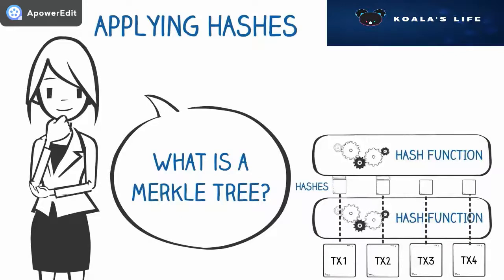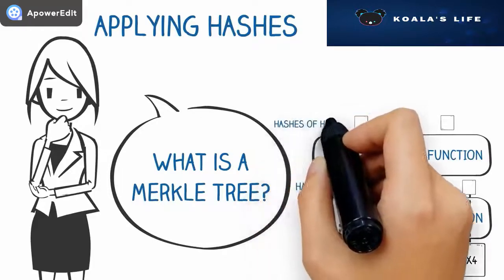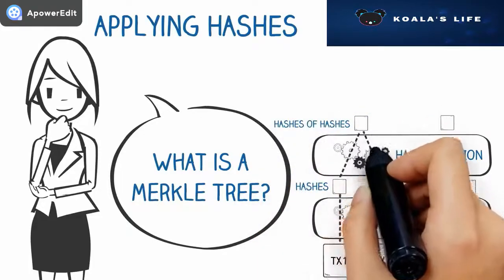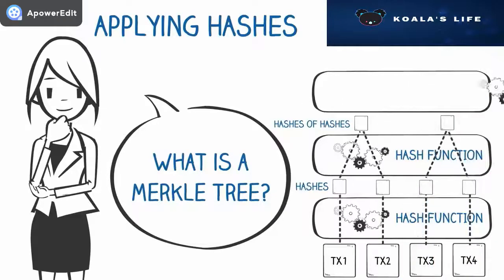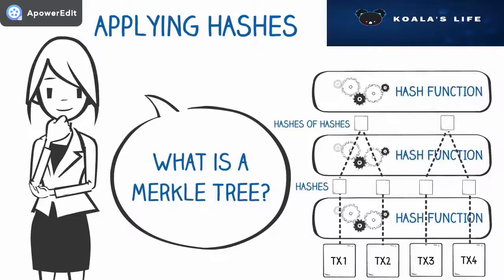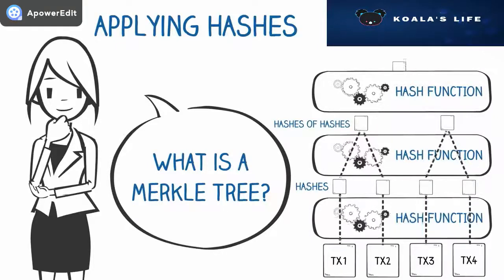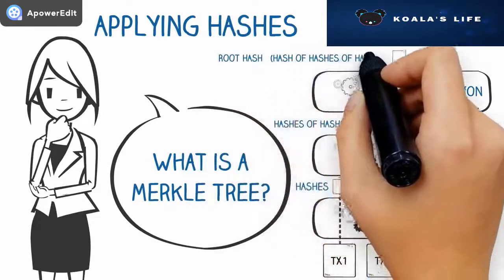Pairs of hashes are then combined and passed through the hash function again. This process generates two separate and unique hashes, which are each based upon the combination of two hashes relating to two transactions. The two hashes are then combined and passed through the hash function again, resulting in a single root hash forming a complete Merkle tree.